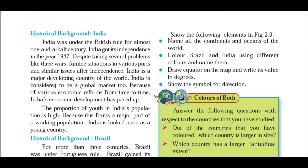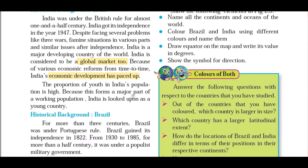After independence, India is a major developing country and is considered a global market because Indian population is almost 1.35 billion — a very huge population and one of the major global markets in the world. Because of various economic reforms from time to time, India has grown economically. In terms of GDP, India's rank in the world is fifth, and according to purchasing power parity, India is the third largest economy.